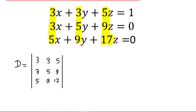Here we will use a shortcut method to calculate this determinant value. To use this shortcut method, what we have to do is rewrite these two columns just close to this determinant — basically just close to this matrix. So you can have 3, 3, 5 and you can have 3, 5, 9. So I have rewritten the first two columns.